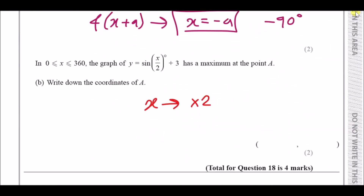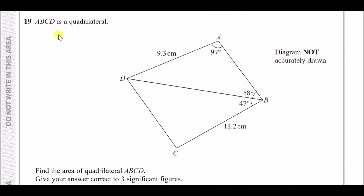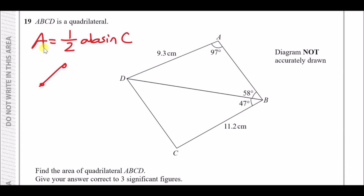Number 19: find the area of a quadrilateral. A diagonal line from D to B divides it into two triangles. We'll use the formula: area equals half a b sine C. The plan is to first find the length DB using the sine rule on the top triangle, then use that length to find the angle and area of both triangles.